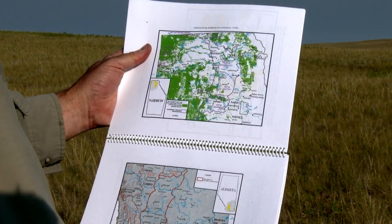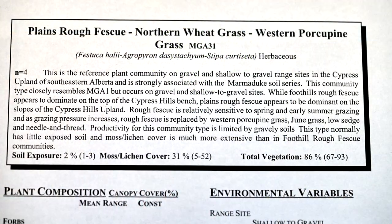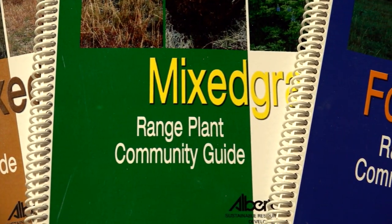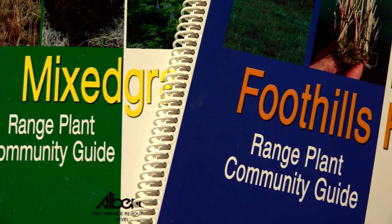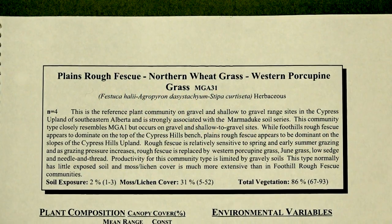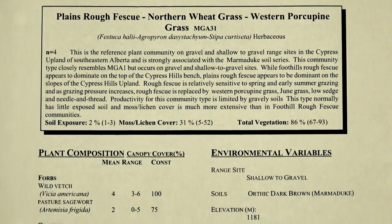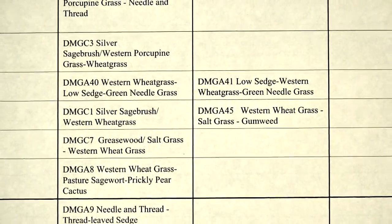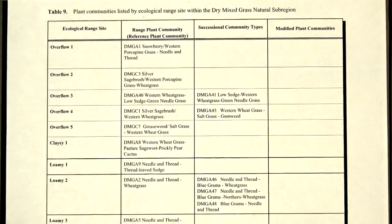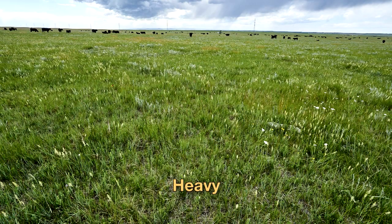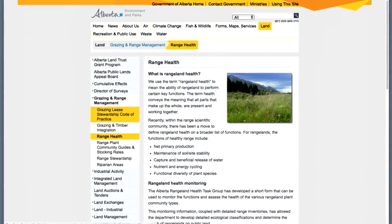Range plant community guides have been developed for all grazing areas of the province from thousands of range vegetation survey records and range reference area data. These classification documents describe the major range plant communities found in your area, including both the potential plant communities for the site and those that develop with different levels of disturbance — light, moderate, to heavy grazing. These documents are produced and maintained by Alberta Environment and Parks.